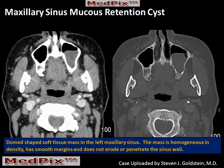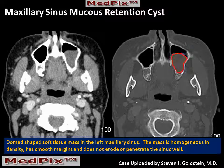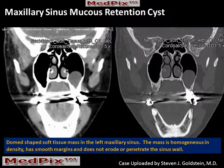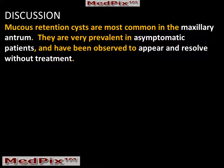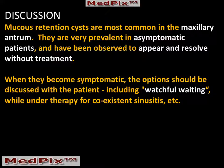They are most common in the maxillary sinus and least common in the sphenoid sinus. As an example, here is an asymptomatic maxillary sinus mucous retention cyst. We can see that the lesion is relatively homogeneous and water-like in its attenuation, and the sinus cavity is not remodeled and retains its normal shape. In the coronal image, including bone windows, we can see the classic dome-shaped appearance of the upper margin of the mucous retention cyst, and again there is no bony remodeling. Mucous retention cysts are very prevalent and have been observed to appear and resolve without therapy. When they do become symptomatic, options should include watchful waiting as well as treatment for the underlying sinusitis.